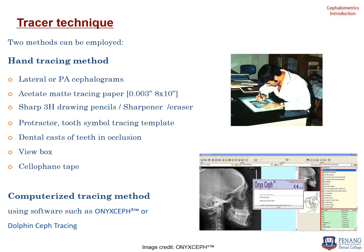Once a cephalogram is exposed and developed, there are two methods of tracing it. The first is the hand tracing method. For this you need a lateral or posterior-anterior cephalogram, acetate mat tracing paper, pencils, a protractor, a dental cast, a good view box, and some silicone tape. During the hands-on exercise you'll better understand how to use all these to trace a cephalogram.